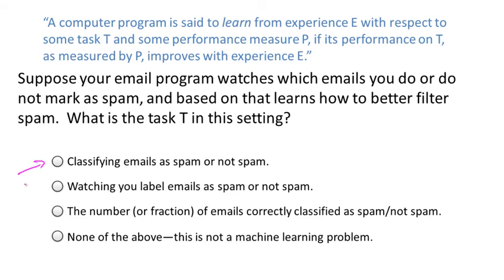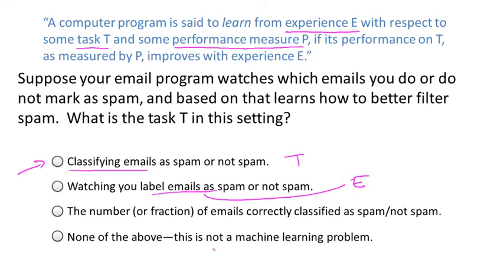Hopefully you got that classifying emails is the task T. This definition defines a task T, a performance measure P, and an experience E. Watching you label emails as spam or not spam would be the experience E, and the fraction of emails correctly classified might be our performance measure P. So our system's performance on task T, as measured by P, will improve after the experience E.